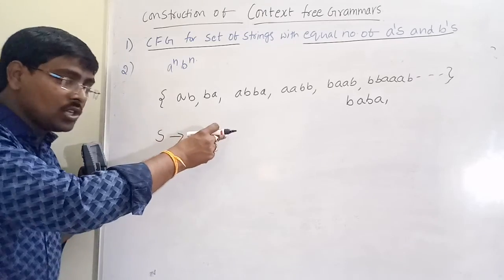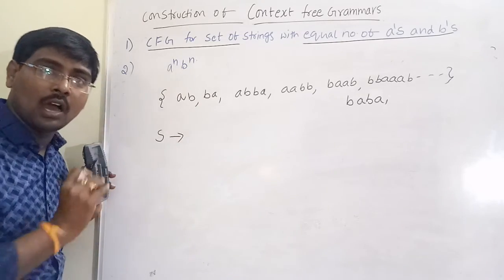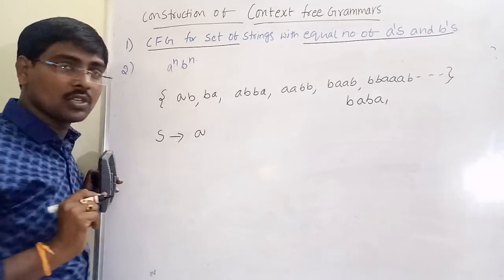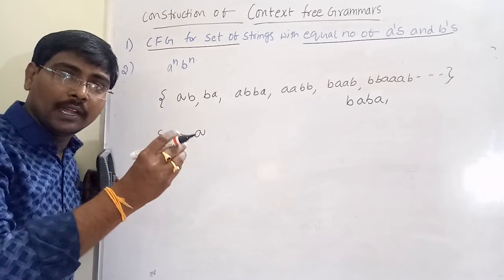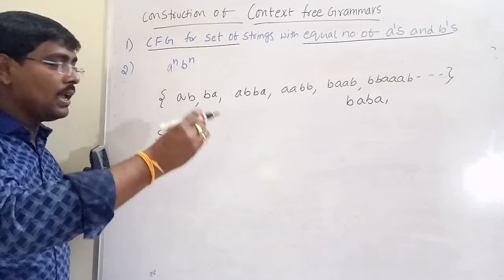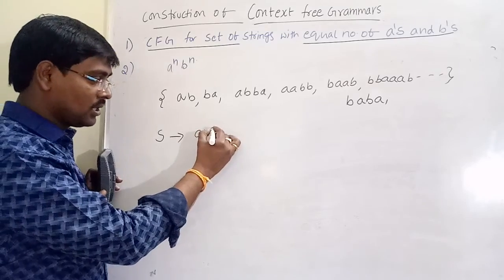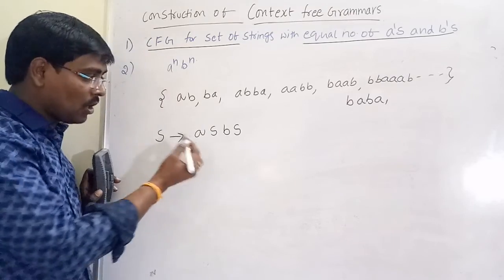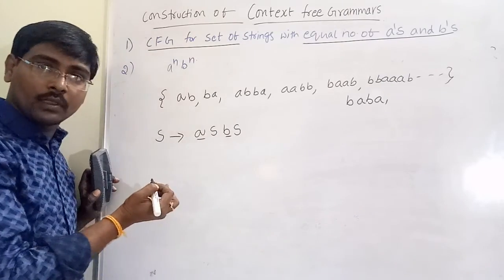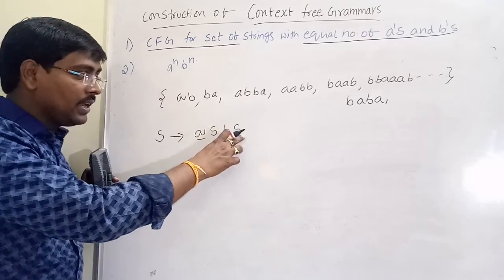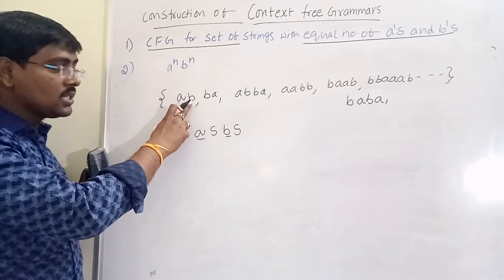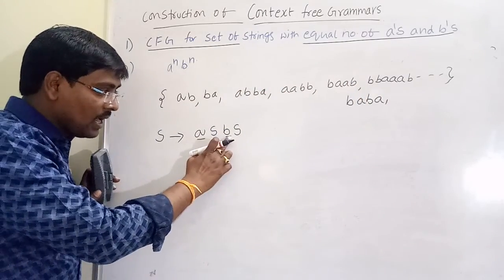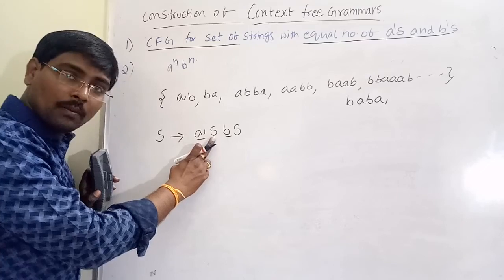The grammar starts with S. If the string starts with either a or b, we have two cases. Suppose my first assumption is: if it starts with a, between a and b I have any combination. Observe this point — if my string starts with a and ends with b, or starts with a and ends with a, between those we can write any combination of a's and b's.